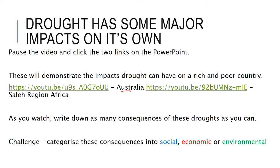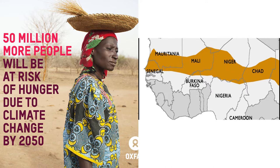Categorise the consequences into social, economic or environmental. The Sahel region goes all the way across Africa from Mauritania and Senegal in the west over to Djibouti in the east — it's a semi-desert area. There's an Oxfam poster here saying that up to 50 million more people will be at risk of hunger as a result of famine from drought in this region. So obviously a very significant social and economic impact.